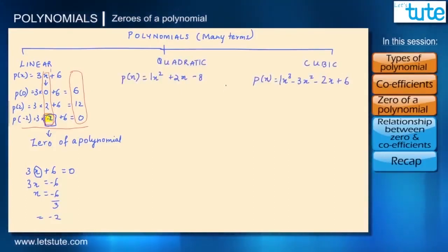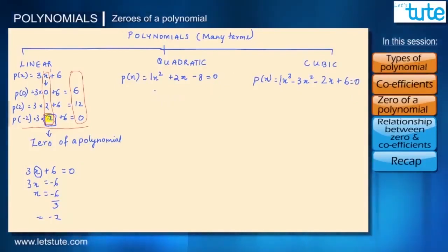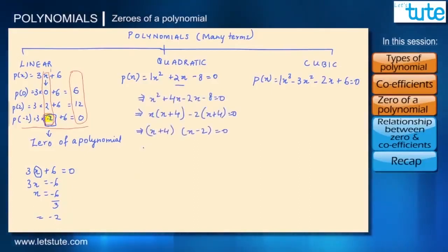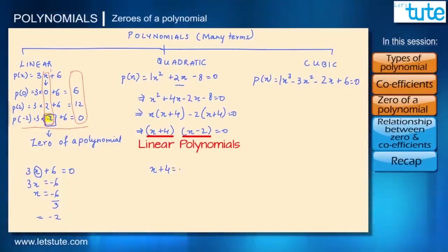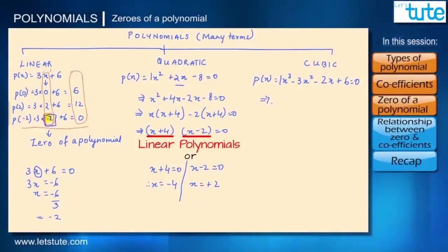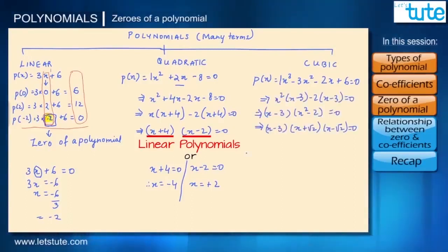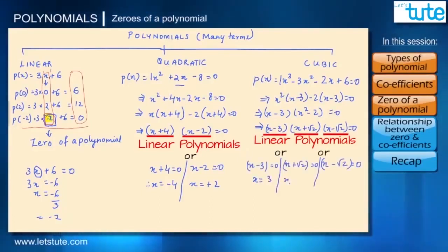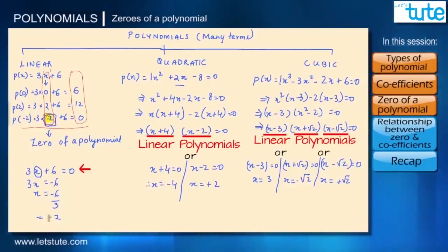In the same way we can find zeros for any polynomial by equating it with 0. Let's find zeros for this quadratic polynomial. We factor it into two linear polynomials: X + 4 = 0 or X − 2 = 0, giving X = minus 4 or X = plus 2. Similarly, for the cubic polynomial, we break it into three linear polynomials, giving X = 3, X = minus root 2, or X = plus root 2.